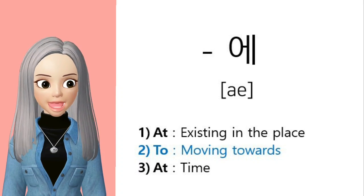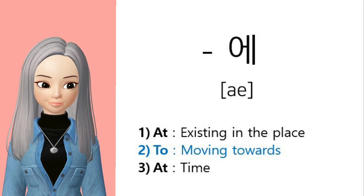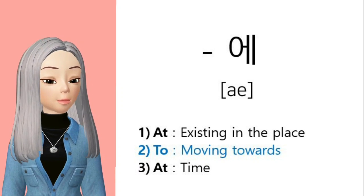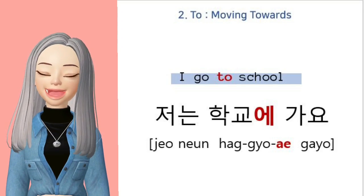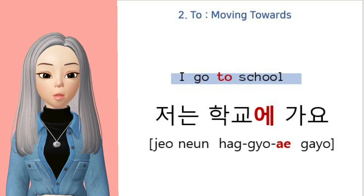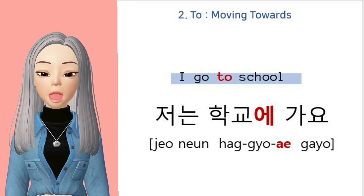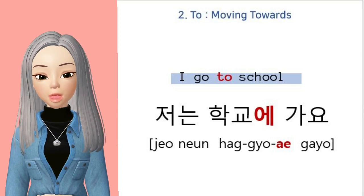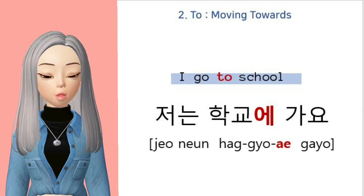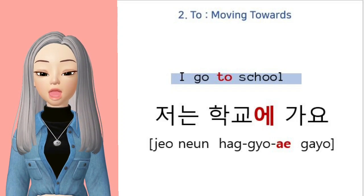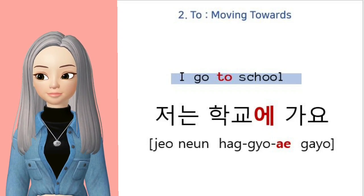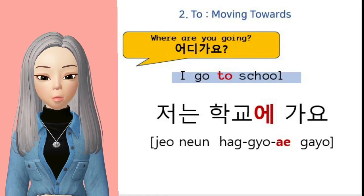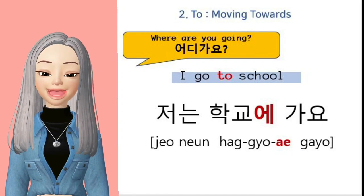The second meaning of 에 is 'to' in English. It's when you're talking about something or someone moving towards something else. For example, the sentence 'I go to school' would be 저는 학교에 가요. Here, you're moving towards school, so you use 에. Where are you going? 어디 가요? I go to school — 저는 학교에 가요.